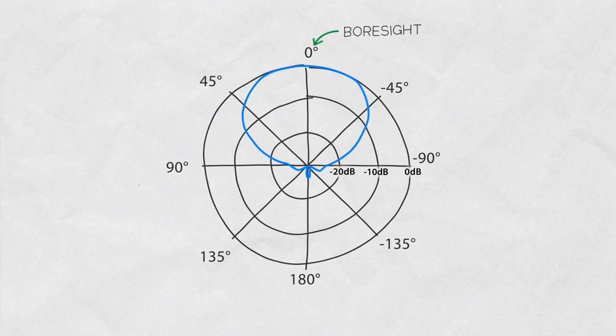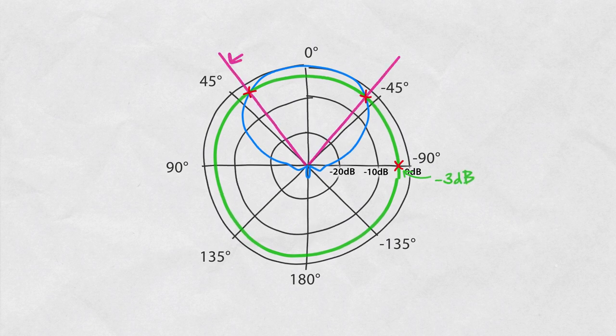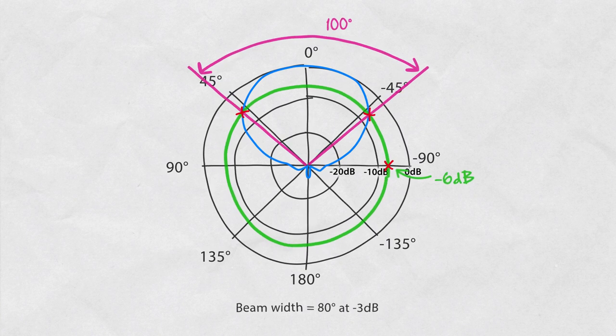So how do you correctly read beam width from a polar graph? Boresight gain is usually at zero degrees. Looking at the main lobe gain curve, find the spots where the gain is 3dB less than the maximum gain. Connect them with zero and measure the angle. For quarter power beam widths, find the spot where the signal drops 6dB from the maximum boresight gain and measure that angle.